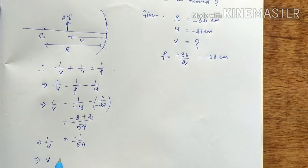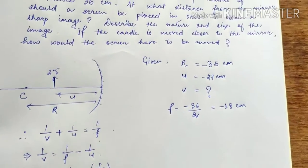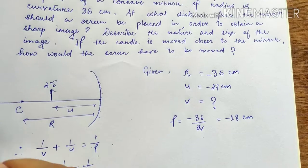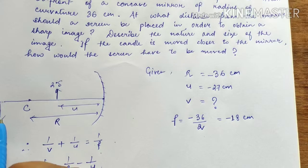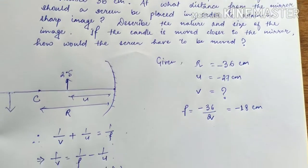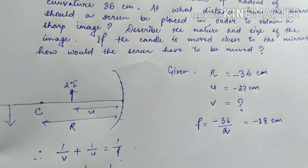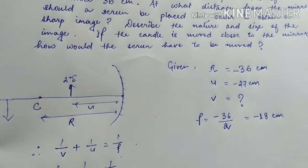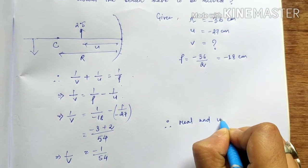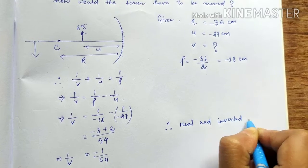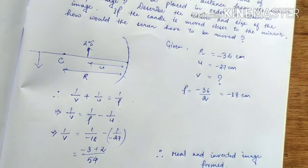V is minus 54 cm. The image is formed at 54 cm. Therefore, a real and inverted image is formed.